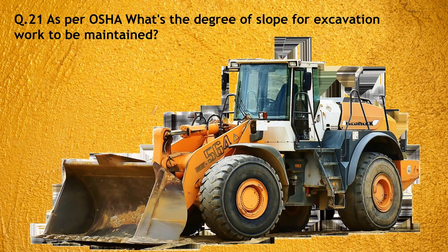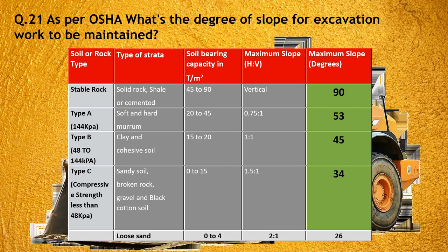Question number 21: As per OSHA, what degree of slope for excavation work is to be maintained? As per OSHA, soils are classified as: stable rock, Type A soil, Type B soil, and Type C soil — classified based on compressive strength. Stable rock requires a maximum slope of 90 degrees. Type A soil, with compressive strength of 144 kPa or greater, requires a 53-degree slope. Type B soil, with compressive strength of 48 to 144 kPa, requires a 45-degree slope. Type C soil, with compressive strength less than 48 kPa, requires a 34-degree slope. These refer to the horizontal-to-vertical slope ratio and soil bearing capacity.